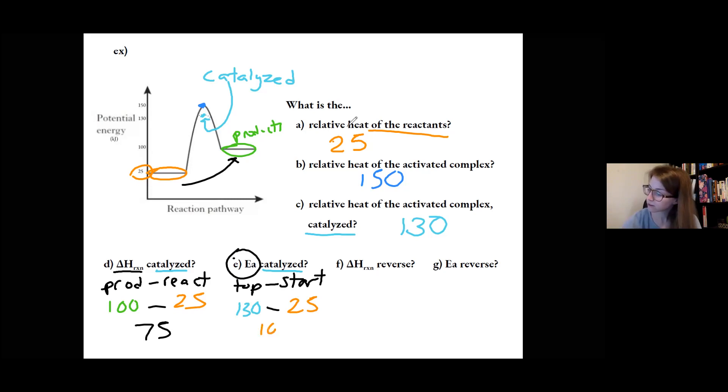This is a smaller value. I get 105. I would have gotten a larger value if we had used 150 minus 25. So the catalyst does lower the activation energy.